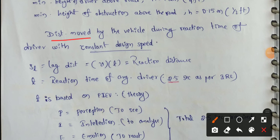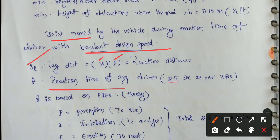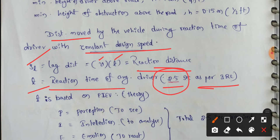SL, or lag distance, is the distance covered by the vehicle during the driver's reaction time at constant design speed: SL = V × T, where T is the reaction time. The reaction time of an average driver is 2.5 seconds as per IRC (Indian Road Congress).